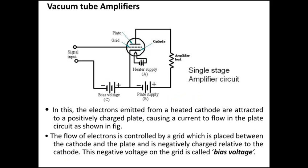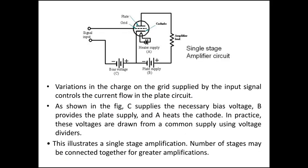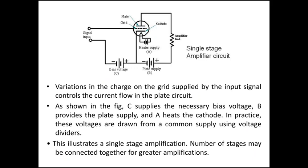In the vacuum tube amplifier figure, you can see there is a plate, a grid, a cathode, a heat power supply, and a cathode tube. The signal output and input are shown along with a cathode and biased voltage. Using the vacuum tube amplifiers, electrons emitted from a heated cathode are attracted to a positively charged plate, thus causing a current to flow into the plate circuit. The flow of electrons is controlled by a grid placed between the cathode and the plate, and the negatively charged voltage on the grid is called the biased voltage. The variation in the charge, how it is transmitted, and the voltage transformation leads to greater amplification and gives the correct output.